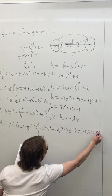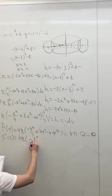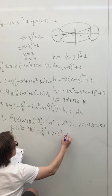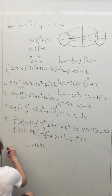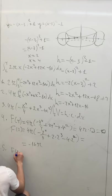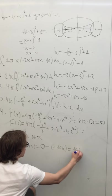And f of 2 equals 4 pi times negative 2 to the fourth over 4 plus 2 times 2 cubed minus 8 times 2 squared, which equals negative 16 pi. And now, to find the volume, we subtract f of 2 from f of 4, and we get 0 minus negative 16 pi, which equals 16 pi.